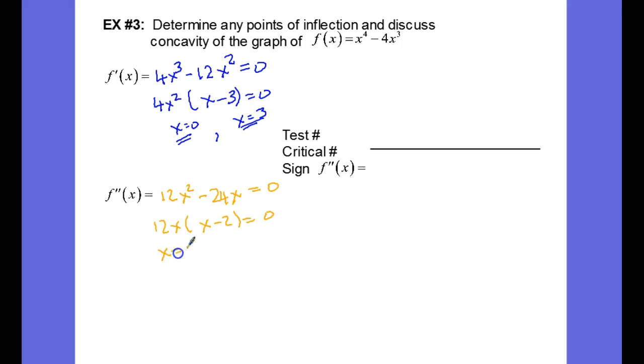giving us x equals 0 as a critical value for f double prime and x equals 2. So let's drop those critical values onto our sign chart, and let's pick some test numbers that fall into each of these three intervals.